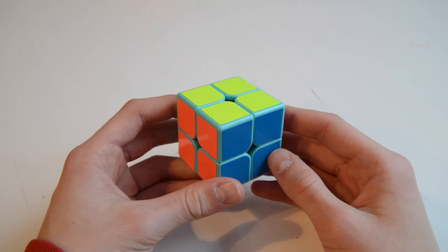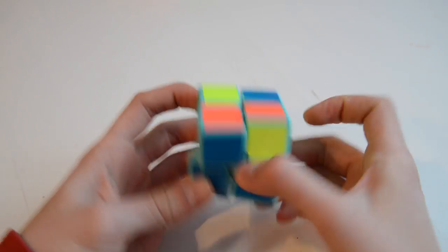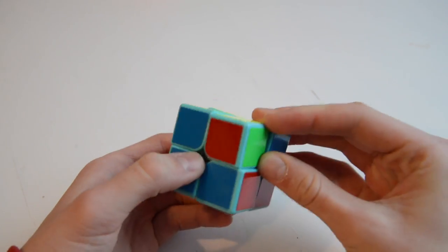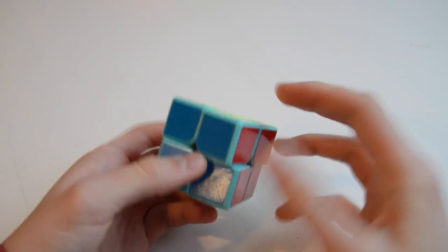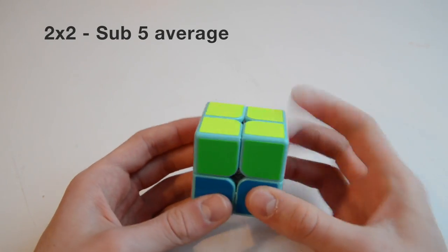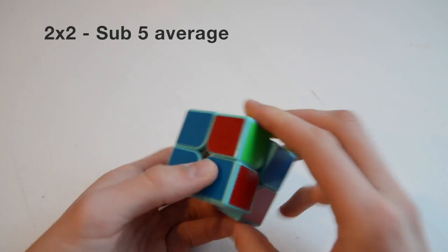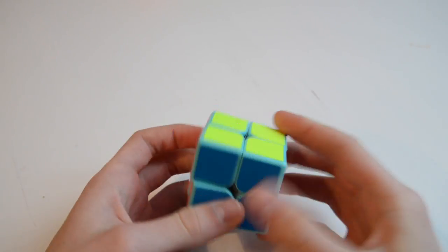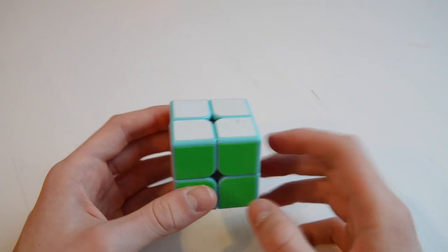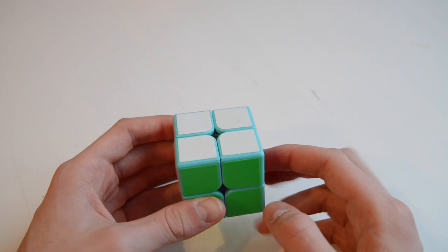For 2x2, I have not trained since the last competition. As you can see, it's actually very old and I can't properly execute T-perms, but my goal is to get sub-5 average. If I do that, I'll be really happy. I'm not going to set single goals because they're only luck based.